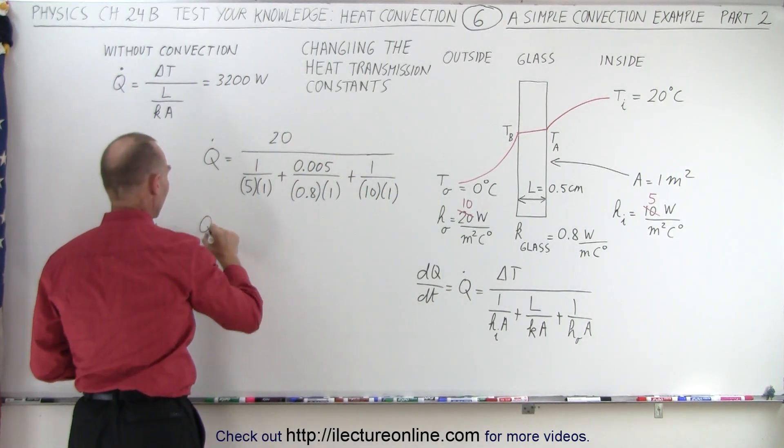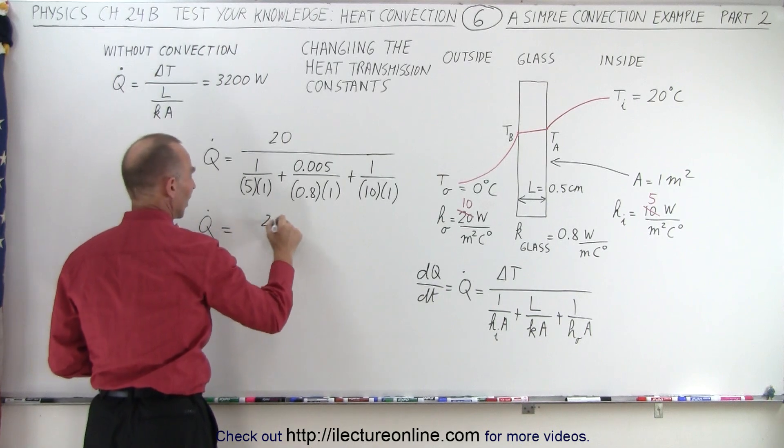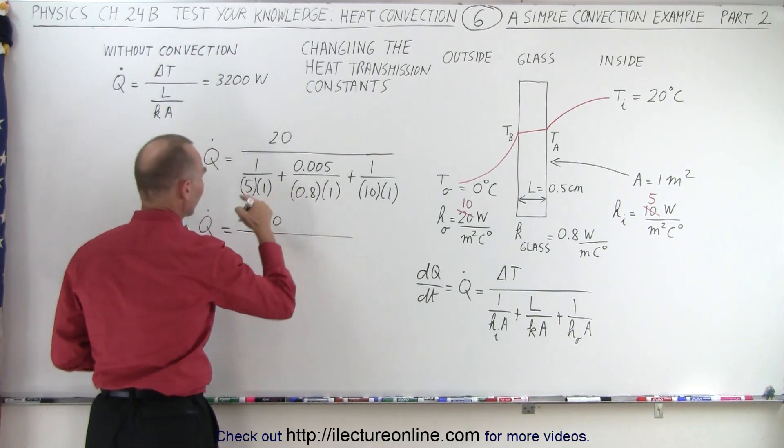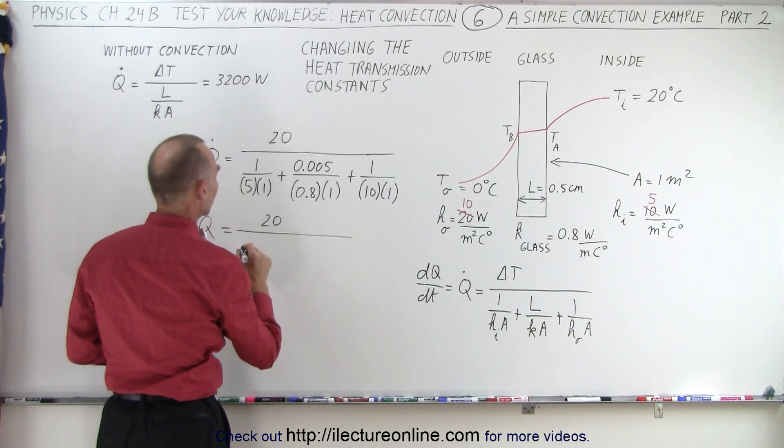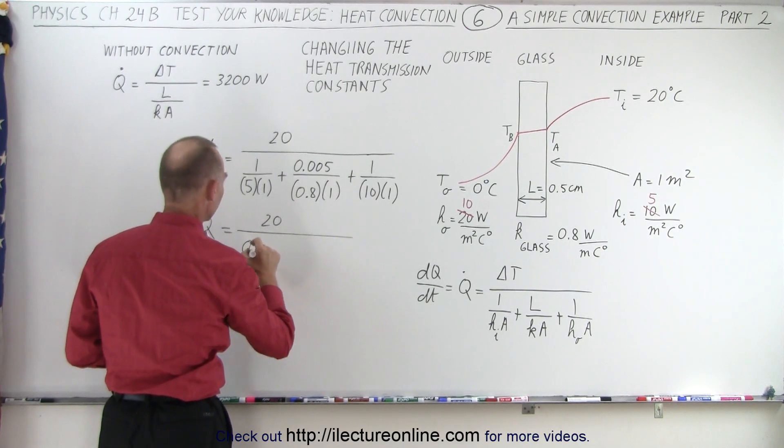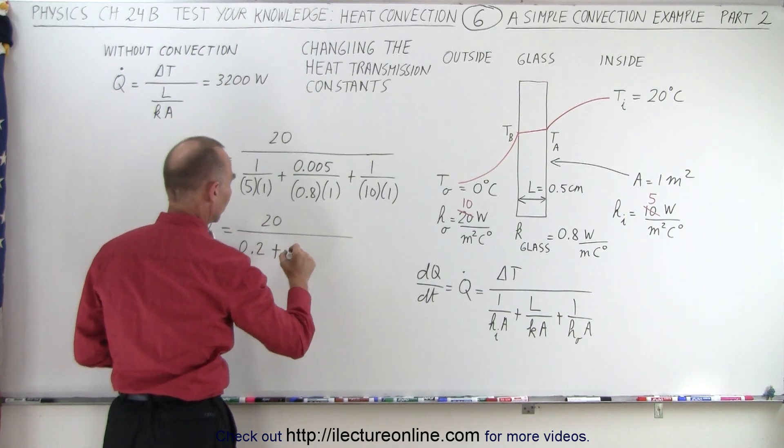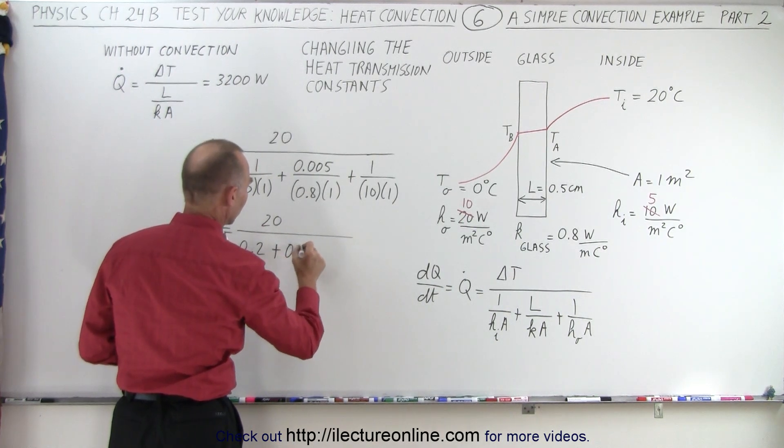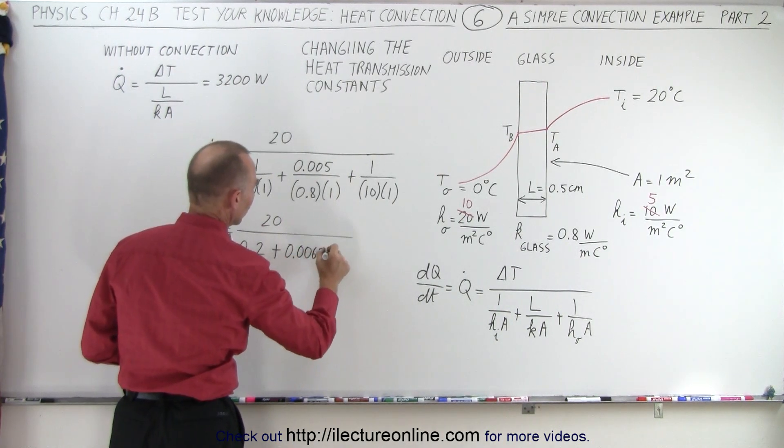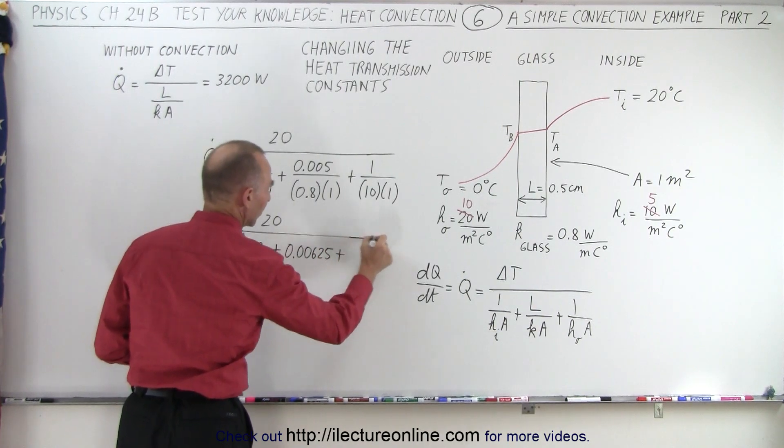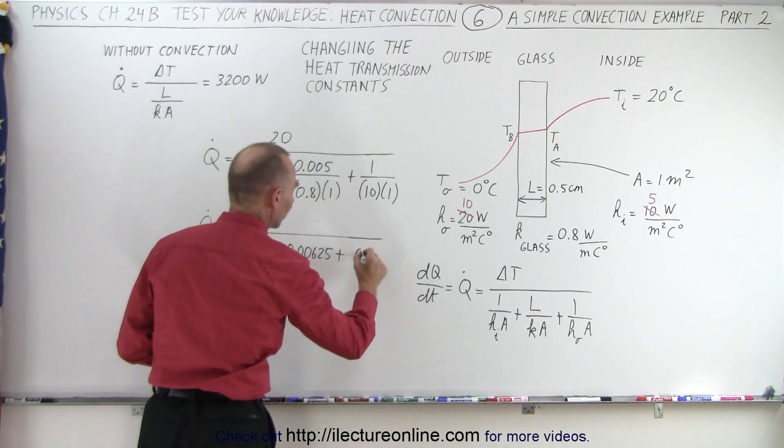So let's go ahead and write these values down, these intermediate values. So that's going to be 1 over 5, which is going to be 0.2, plus this was 0.00625 if I remember correctly from the previous video, and this is equal to 0.1.